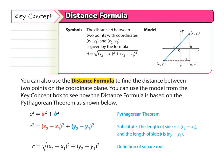Key concept: distance formula. Symbols. The distance D between two points with coordinates (x₁, y₁) and (x₂, y₂) is given by the formula D equals the square root of (x₂ - x₁)² plus (y₂ - y₁)². So you can use the distance formula to find the distance between two points on the coordinate plane. You can use the model from the key concept, which is up here. This is the key concept.